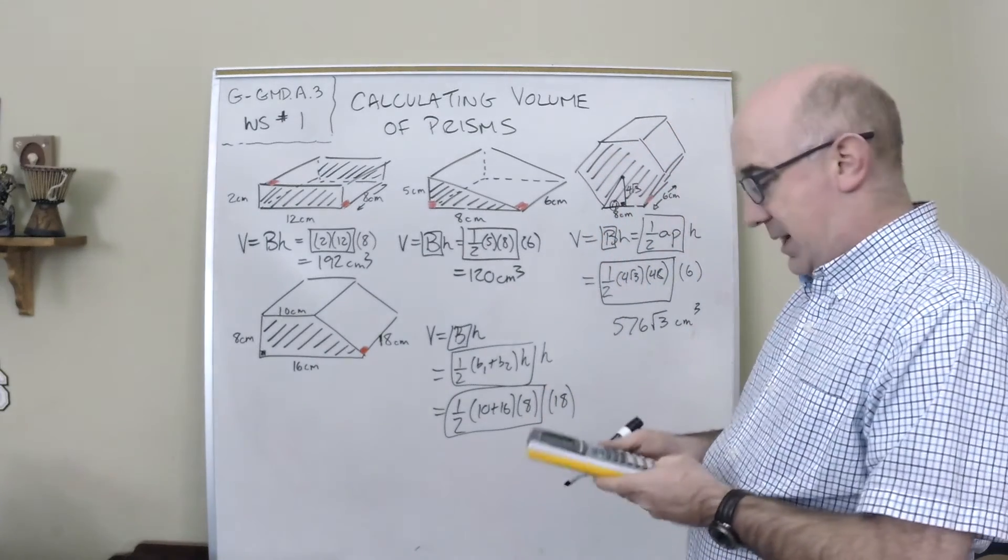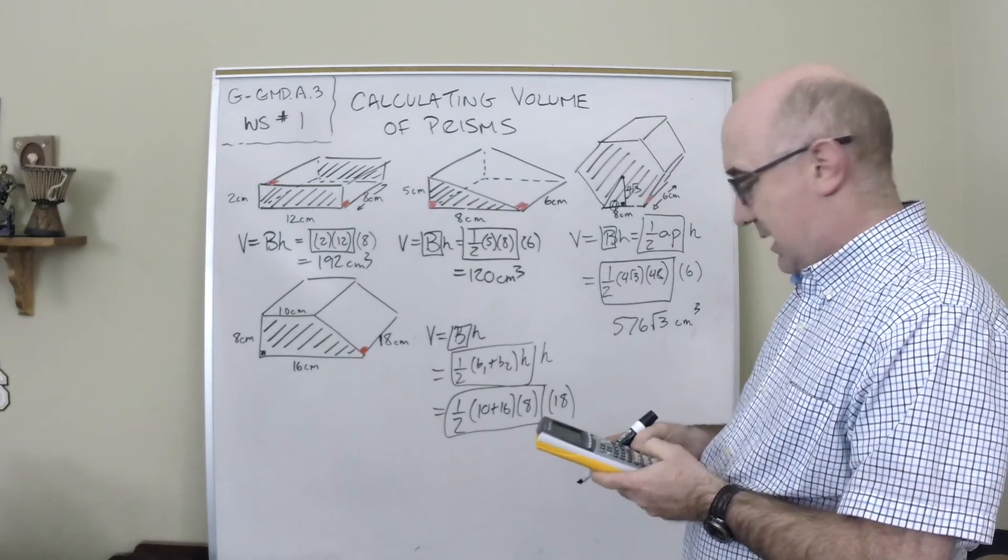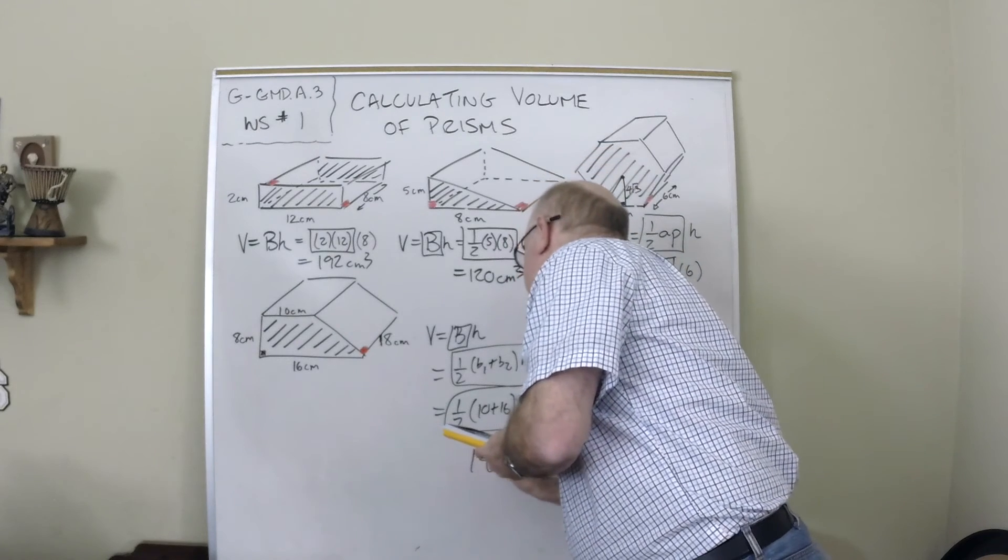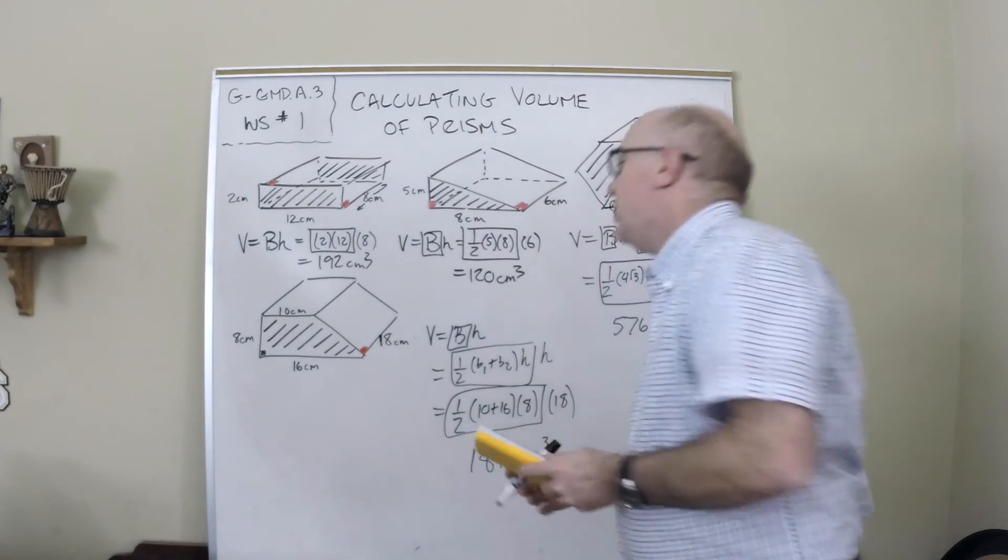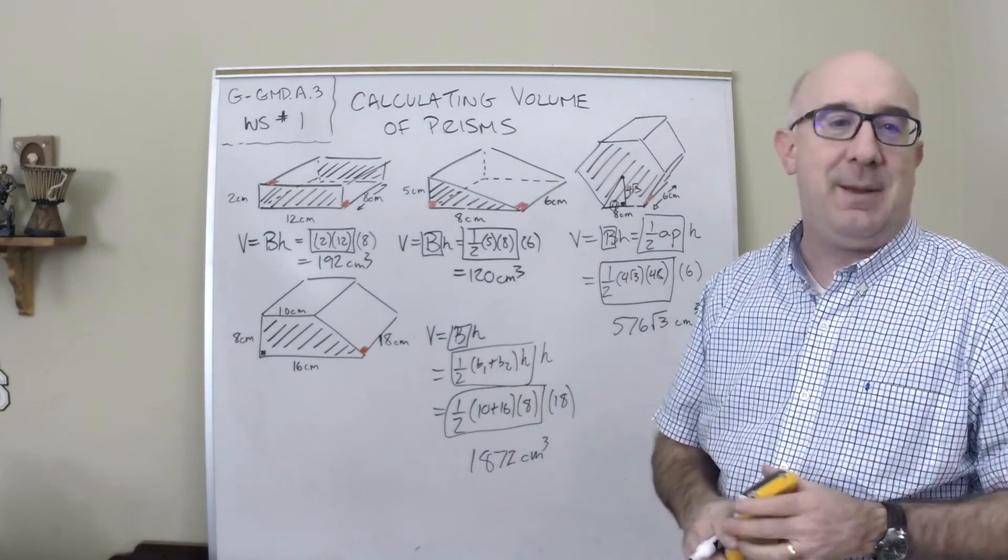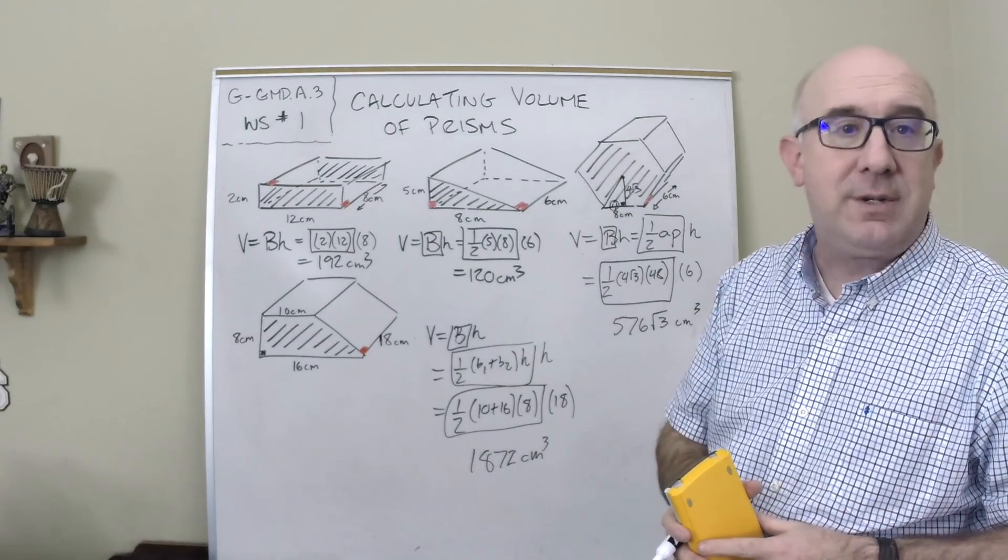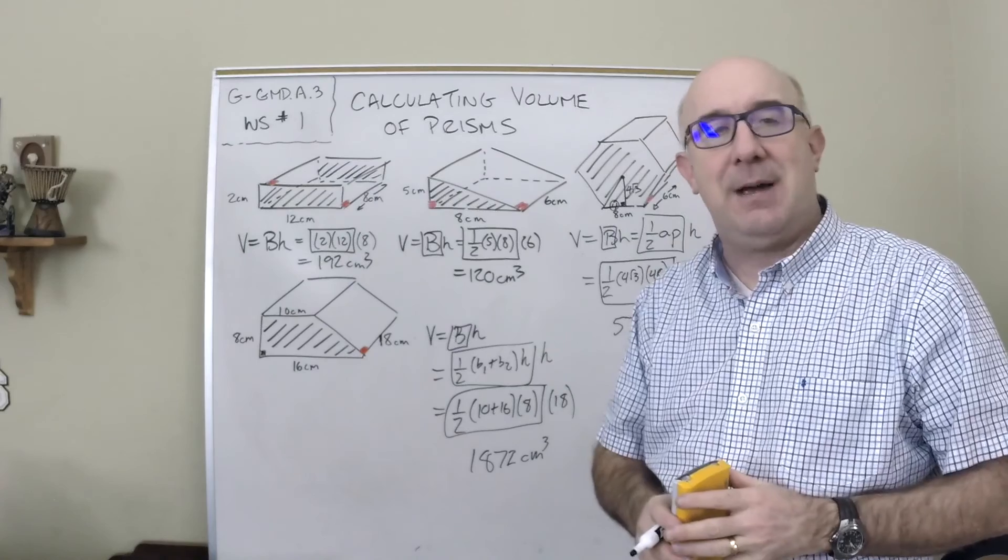So we're going to multiply all that together. 26 times 8 times 18. And I get 1,872 centimeters cubed. There are a couple examples of how to do different types of volume calculations for prisms. One slice times the height. It's not that bad.